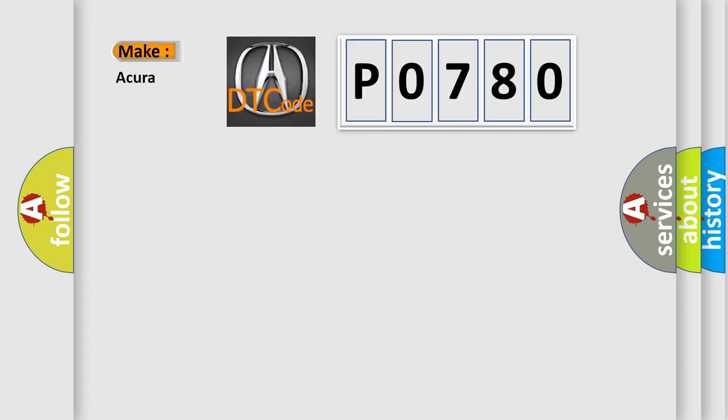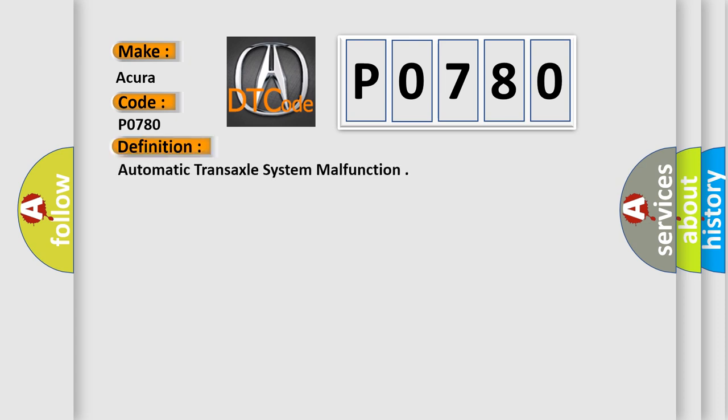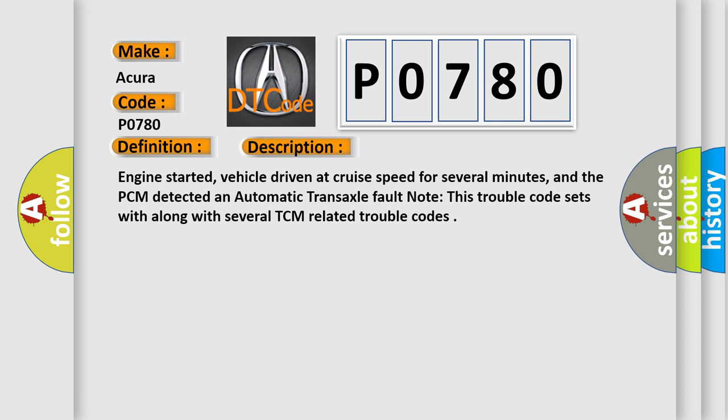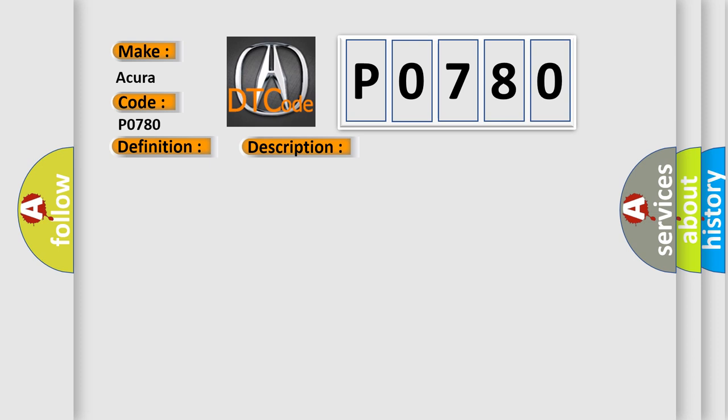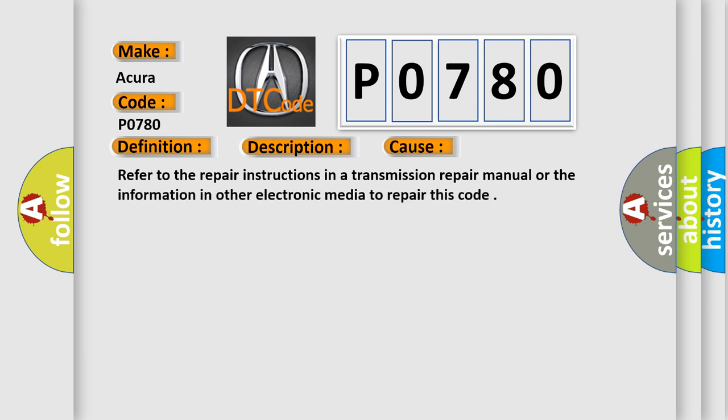What does the diagnostic trouble code P0780 interpret specifically? The basic definition is: automatic transaxle system malfunction. The engine is started, the vehicle is driven at cruise speed for several minutes, and the PCM detected an automatic transaxle fault. Note that this trouble code sets along with several TCM-related trouble codes. Refer to the repair instructions in a transmission repair manual or other electronic media to repair this code.